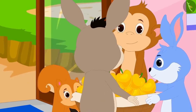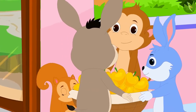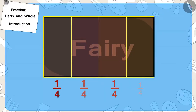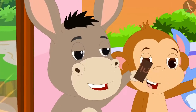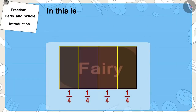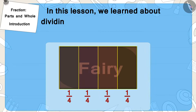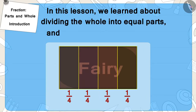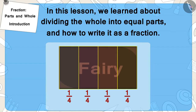Finally, the four of them reached Appu's house with the mango basket. Appu gave Bunny a chocolate, divided it into four equal parts as found in the answer by you, and gave each of them one part of it. Children, in this lesson, we learned about dividing the whole into equal parts and how to write it as a fraction.